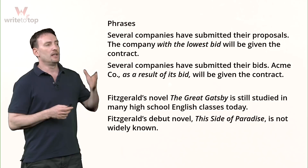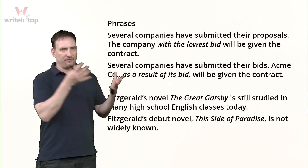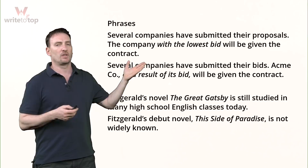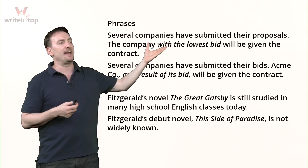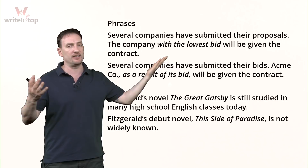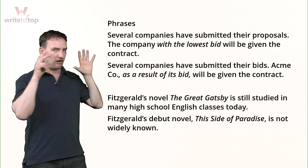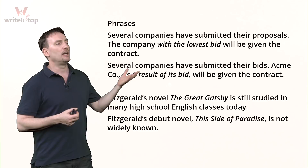Phrases work the same way. Phrases can be used as adjectives or as adverbs. If they're essential, no comma. If they're non-essential, comma. Example: 'Several companies have submitted their proposals. The company with the lowest bid will be given the contract.' Which company? The one with the lowest bid — so instead of a full adjective clause, I use a prepositional phrase. It's an identifying adjective phrase, so no comma. 'Acme Company, as a result of its bid, will be given the contract' — I've already identified which company, so 'as a result of its bid' is an adverb phrase between commas.